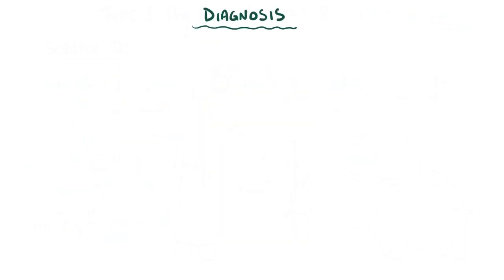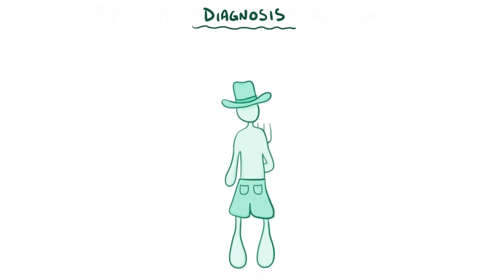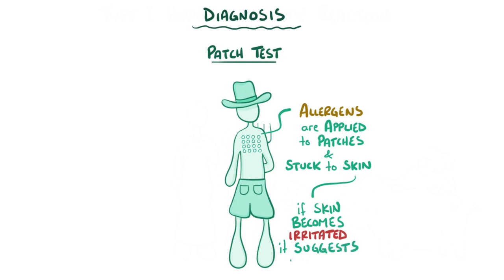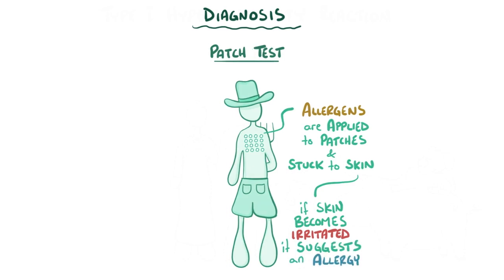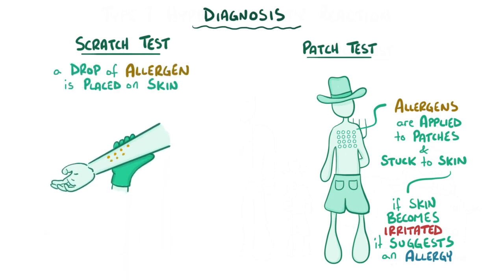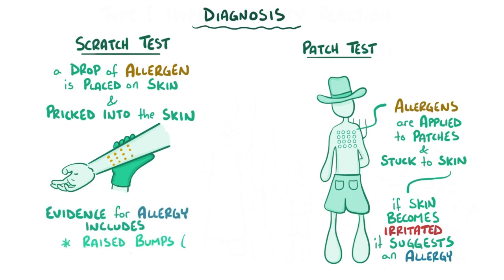The most common way to diagnose allergic rhinitis is through skin testing. One type is called the patch test, where allergens are applied to small patches and stuck onto the skin — if the skin under a particular patch becomes irritated, it suggests an allergy to that substance. Another type is called scratch testing, where a small drop of allergen is placed on the skin and pricked in with a tool, to see if there's evidence of an allergy like raised bumps or wheals, which is itchy red skin.